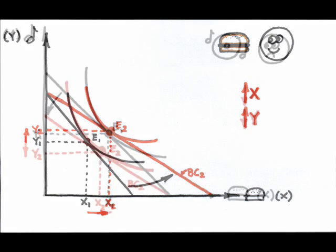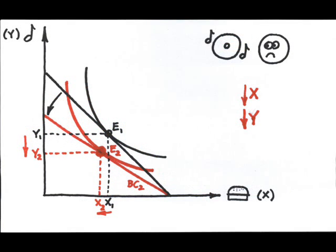Scenario 5. CDs get more expensive. Result? The consumer cuts back on both X and Y, that is food and music, as purchasing power is reduced.